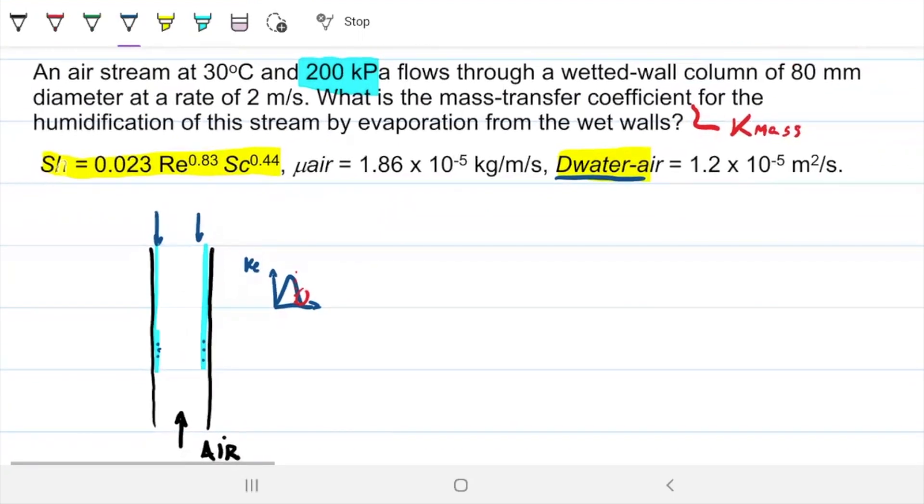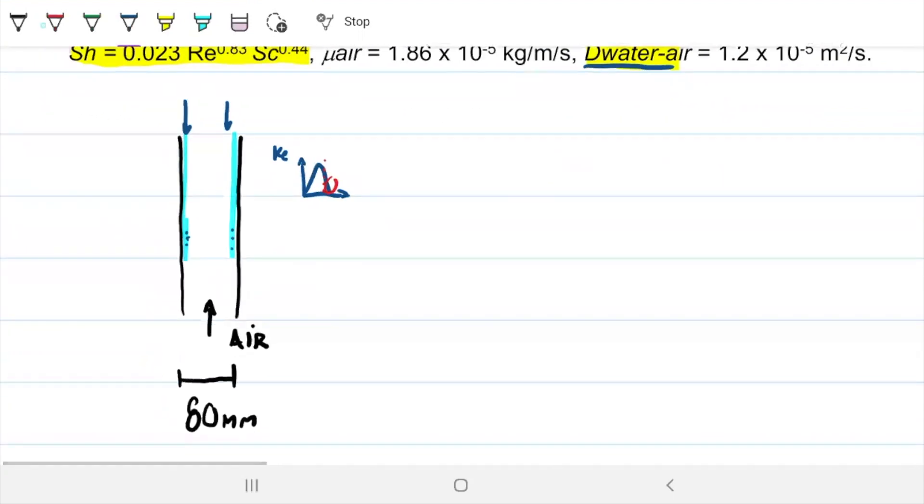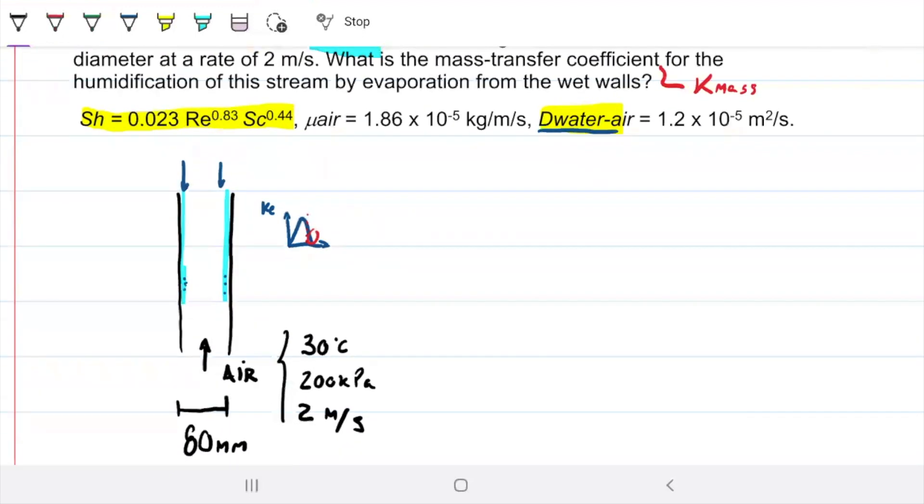So we know that we're blowing air on this, and let's see our air properties. It's 30 Celsius, 200 kilopascals, and 2 meters per second. So let's put that down. So 30 Celsius, 200 kilopascals, and 2 meters per second.